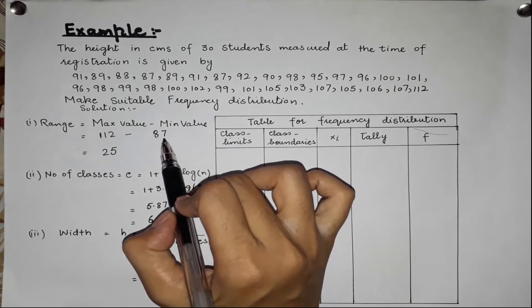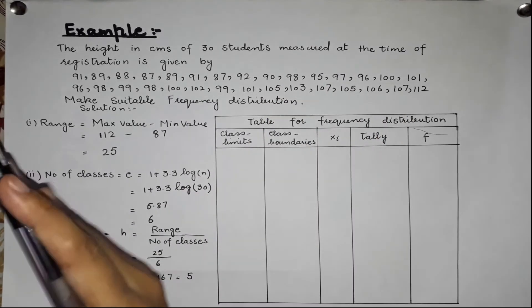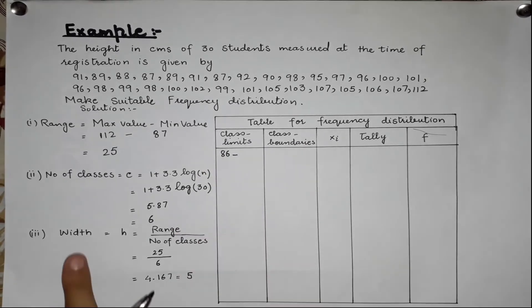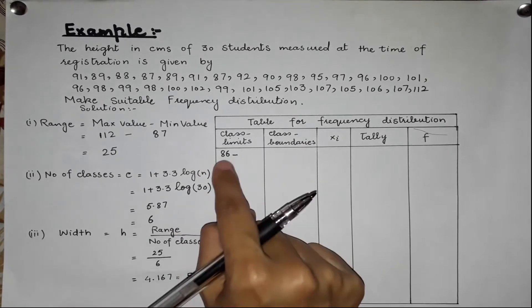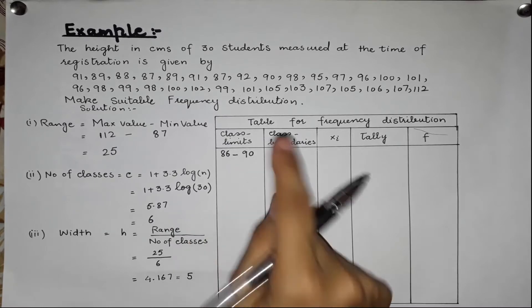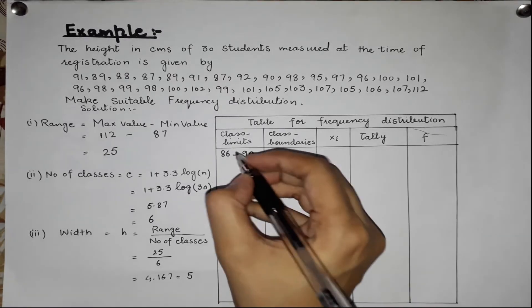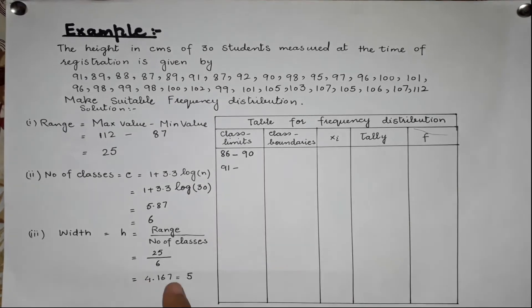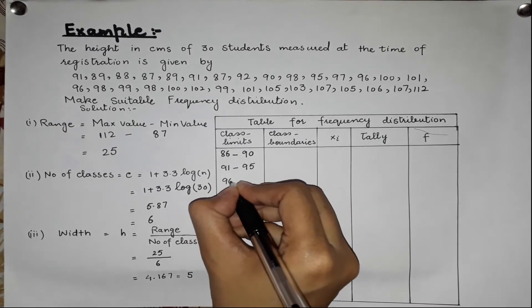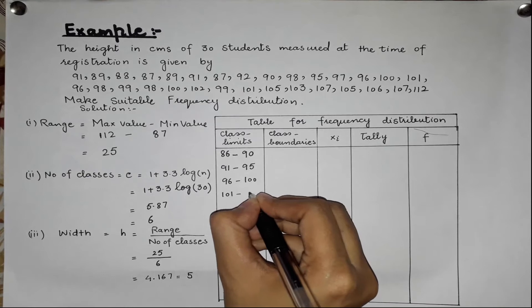For class limits, we start from the minimum value. We add 5 each time to get the class intervals: 86–90, 91–95, 96–100, 101–105, 106–110, and 111–115.